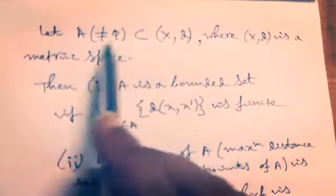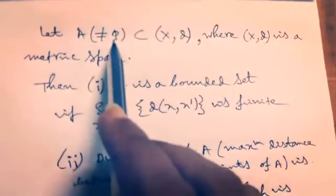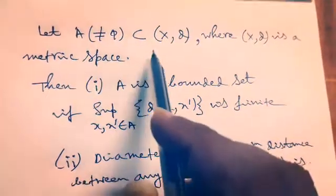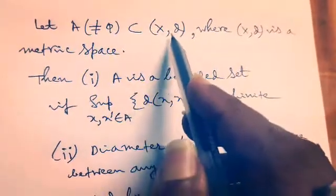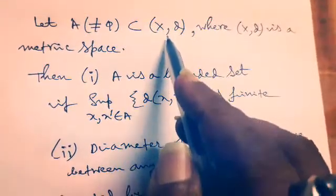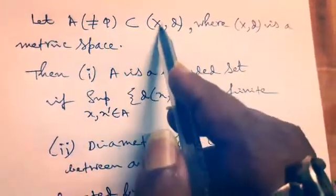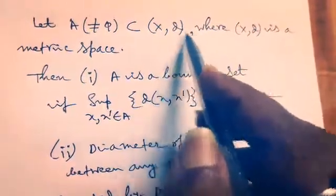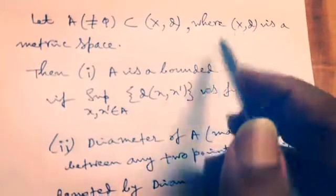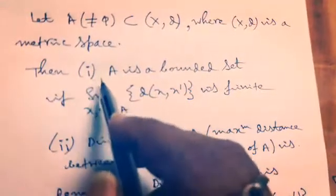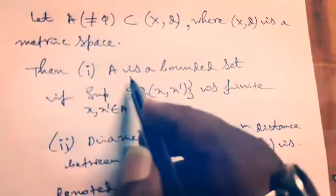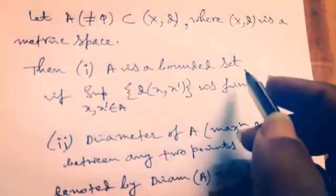Let A be a non-empty set, any non-empty set A, that is not equal to empty set, and which is a subset of metric space (X, d). Where (X, d) is the metric space and d we already know is the usual metric. And then, first condition will be A is a bounded set.